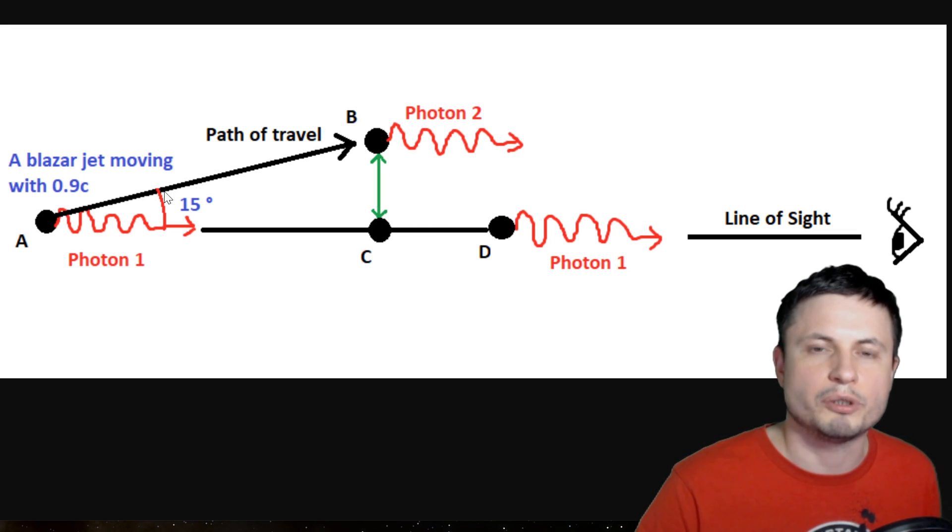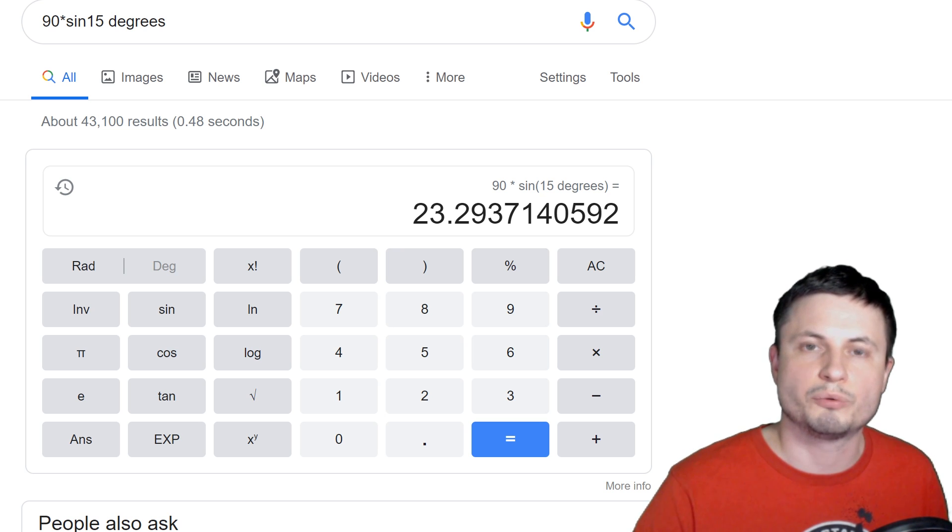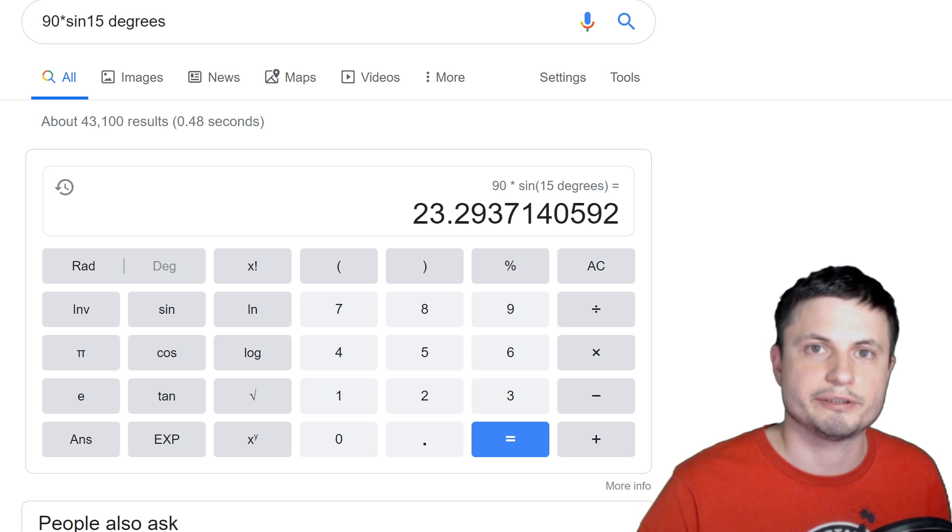Even though technically the light has only traveled 13 light years, it appears to have traveled 23 light years. And the faster the actual jet is releasing the particles, the more superluminal velocity will appear.